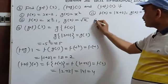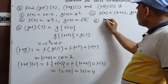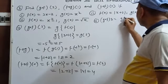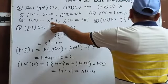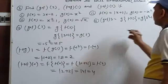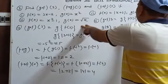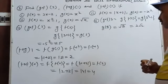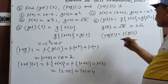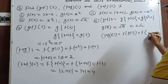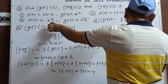Third sub-question: f(x)=x²-1, g(x)=√x. gof(3)=g(f(3))=g(3²-1)=g(8)=√8=2√2. fog(1)=f(g(1))=f(√1)=f(1)=1²-1=0.